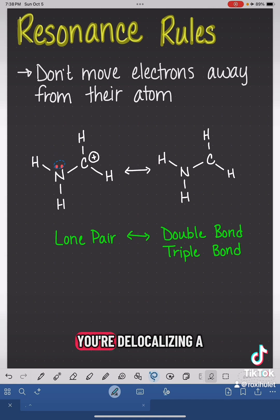This means if you're delocalizing a lone pair of electrons, your only option is to convert it to a double bond or a triple bond that is associated with that original atom. And in this case with our nitrogen, our only option is to make a nitrogen-carbon double bond like this.